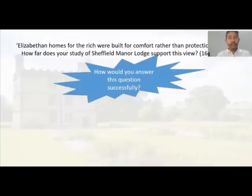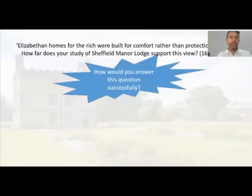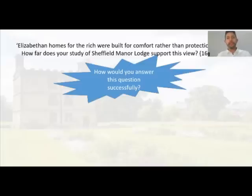Now let's focus on the actual question and look at our exam skills. The question I've chosen is: 'Elizabethan homes for the rich were built for comfort rather than protection. How far does your study of Sheffield Manor Lodge support this view?' You might want to write out the question and start thinking about success criteria, highlight the key phrases, and work out what is required. Notice that in the statement you're given some themes to use, plus the phrase 'how far' — indicating you need to make a judgment.